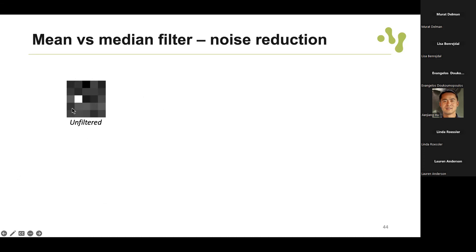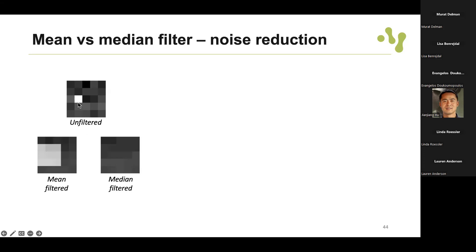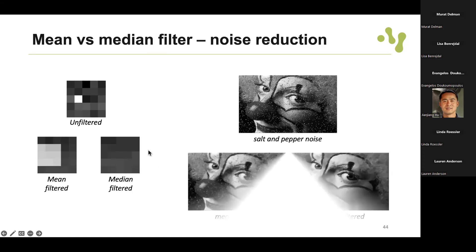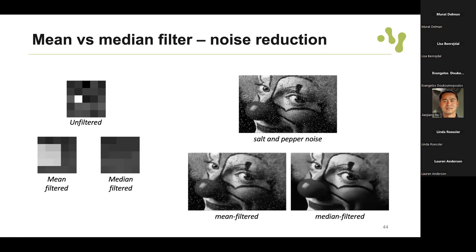To illustrate the difference practically: if you have an image that is mainly dark but has one bright pixel, using the mean filter will smooth this region by averaging values. Using the median filter will cut out that bright pixel because when sorting the neighborhood values, that outlier will be at the end and won't be the median value. So if you want to eliminate what we call salt-and-pepper noise, the median filter is the best choice.